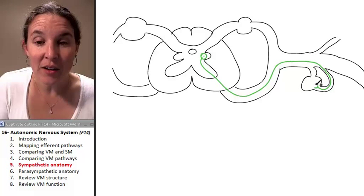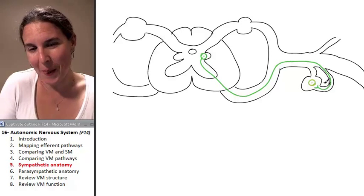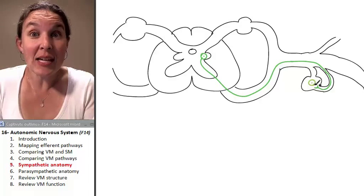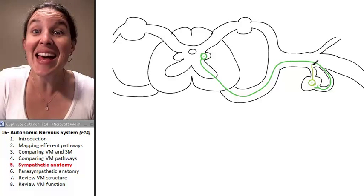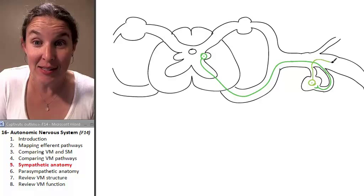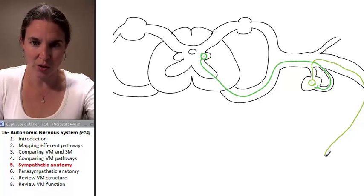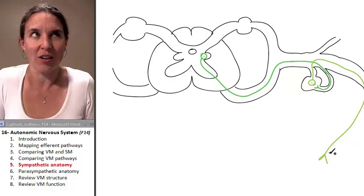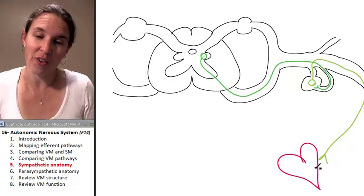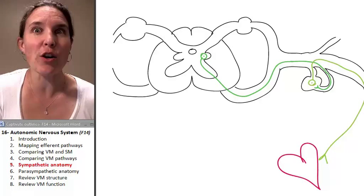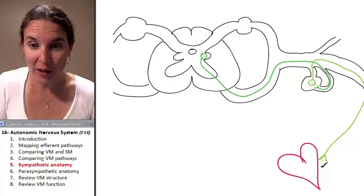I'm going to change my color just a little bit, just so you can see. Can you see the difference between my greens? I want you to be able to see it because now we're synapsing on my sympathetic ganglion, and that neuron is going to reenter the anterior ramus, and then it's going to head out and do its thing out to the effector.